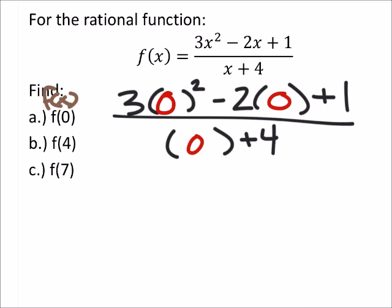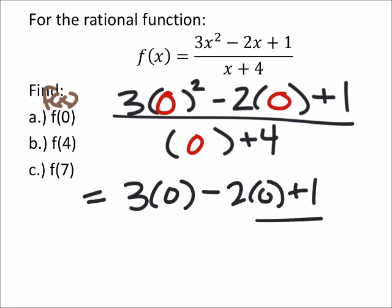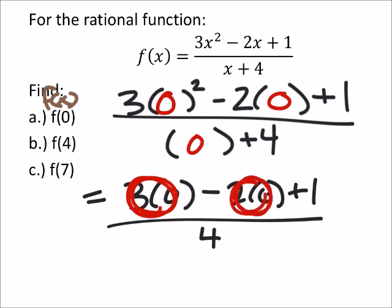So the x's in this case are just going to be 0. And this would equal, well, 0 squared is 0, minus 2 times 0, plus 1, all over 0 plus 4, which is 4. So on this one, 3 times 0 is 0, 2 times 0 is 0, that's very nice. And so 0 minus 0 plus 1 would be 1, all over the 4. There's f of 0.